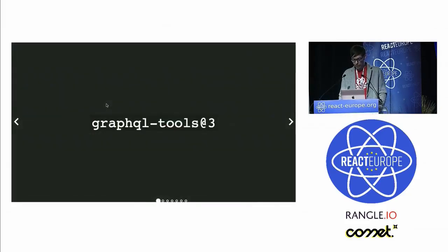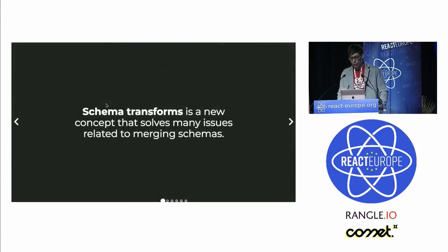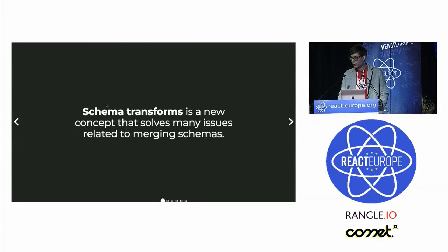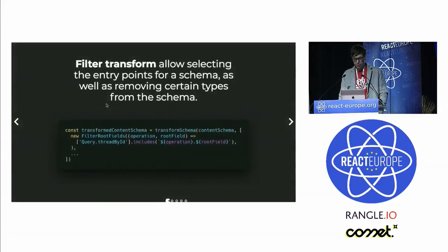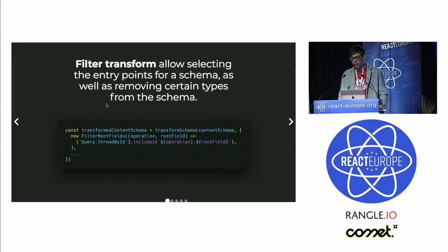With GraphQL Tools version 3, which was recently released, we got a new feature called schema transforms. It's a concept that solves a lot of problems when it comes to schema stitching that there were previously.